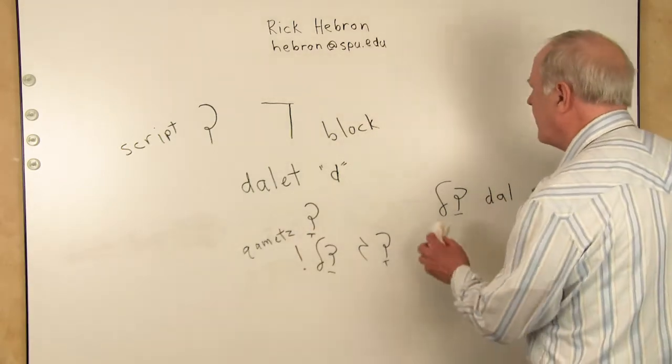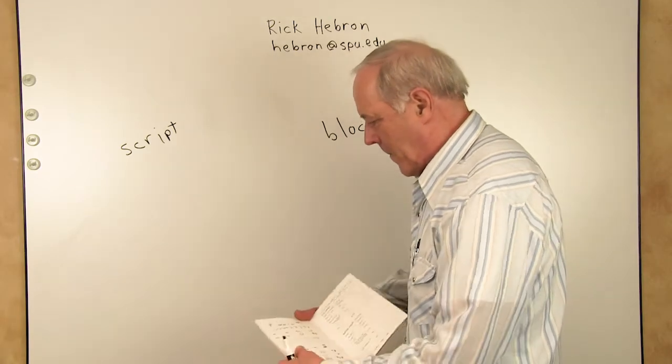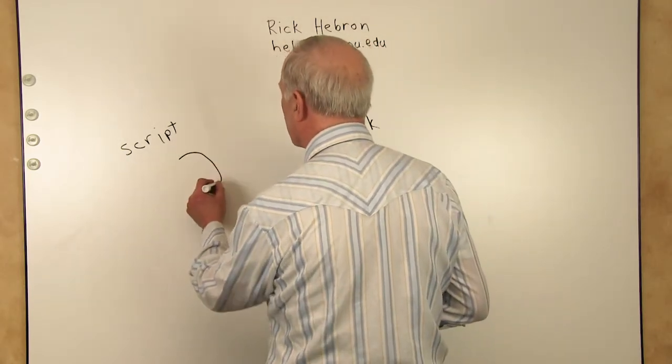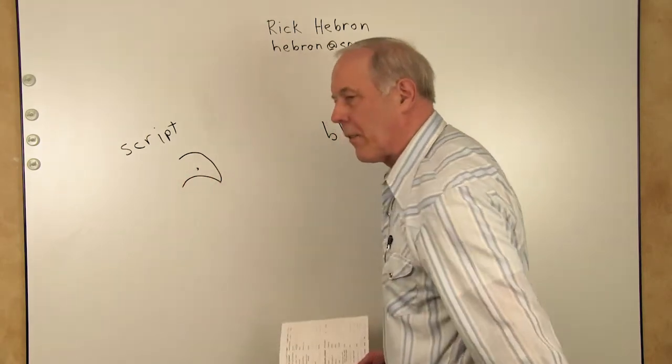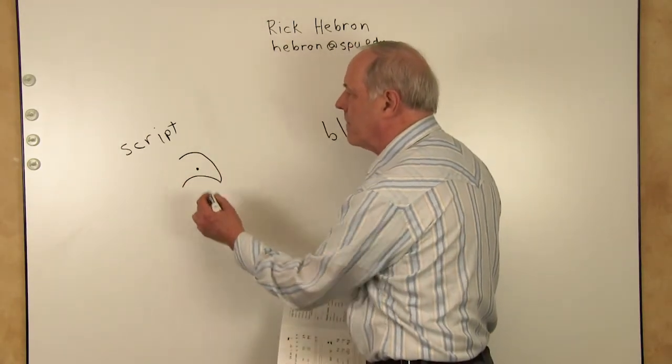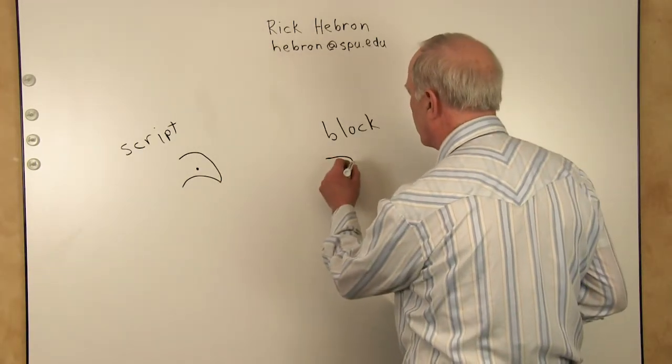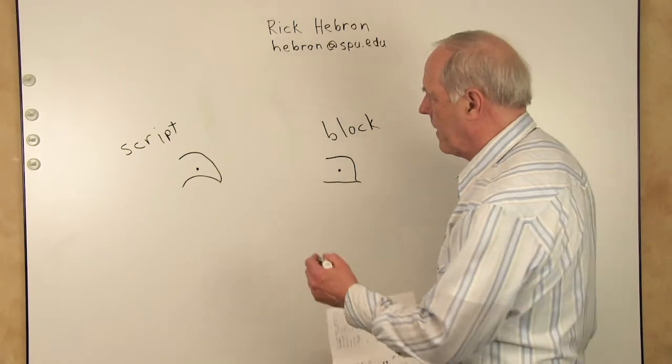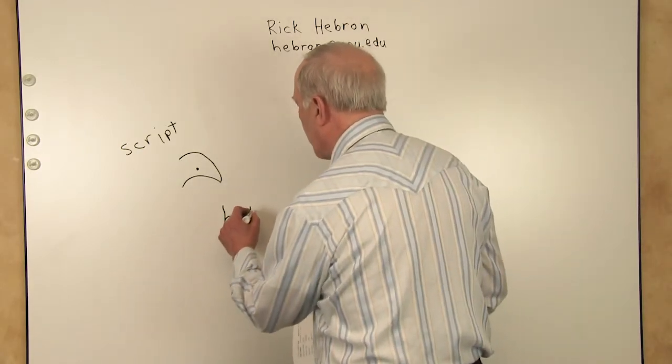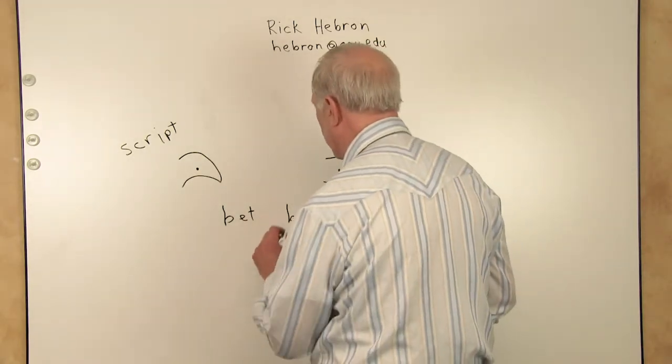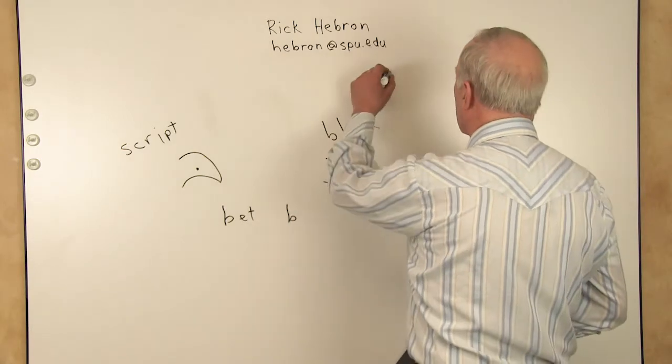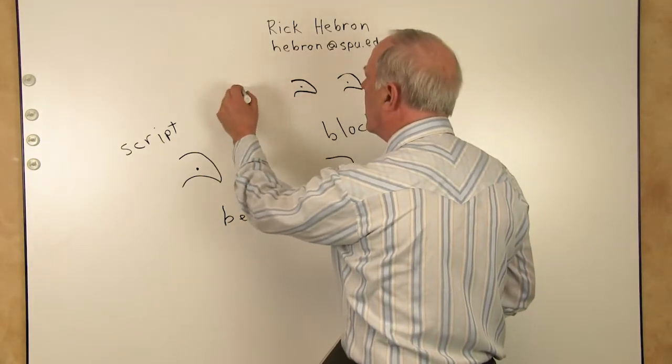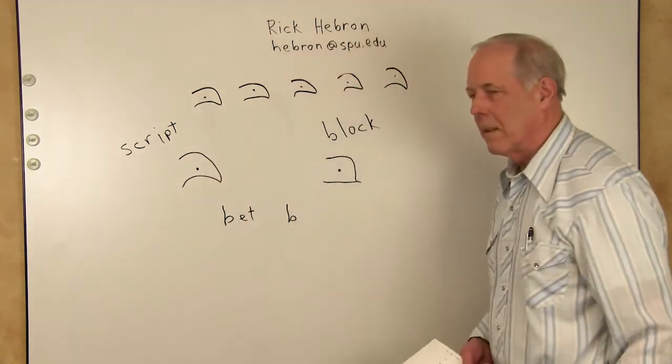We're going to move on to our next letter. Next we will learn the letter Bet. Bet, the script looks kind of like the beak of a bird, it's got a dot in it. Bet, the block is made with two strokes, it has the dot. A Bet makes the sound of B. Write a few of them. We'll go, B, B, B, B, B, B. The letter Bet.